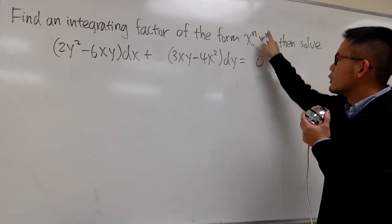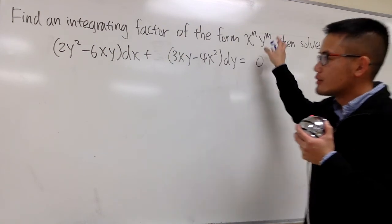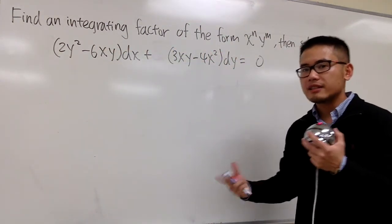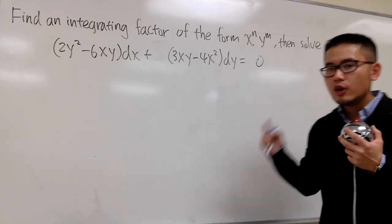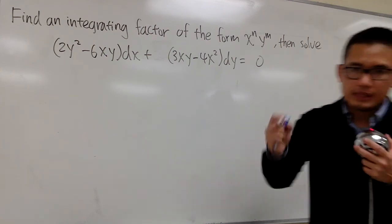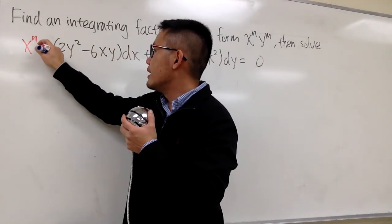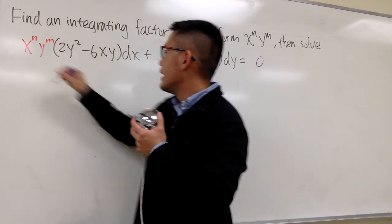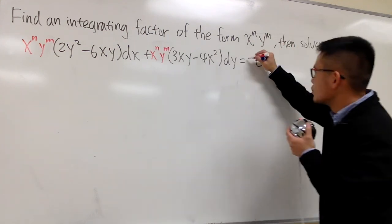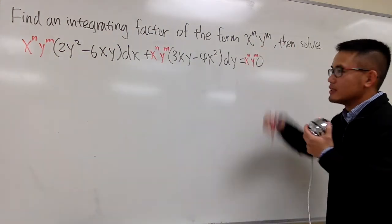Suppose we know the integrating factor looks like x^n * y^m. We take this and multiply everything by that, and then at the end we do the exactness check. Hopefully we'll be able to figure out n and m.